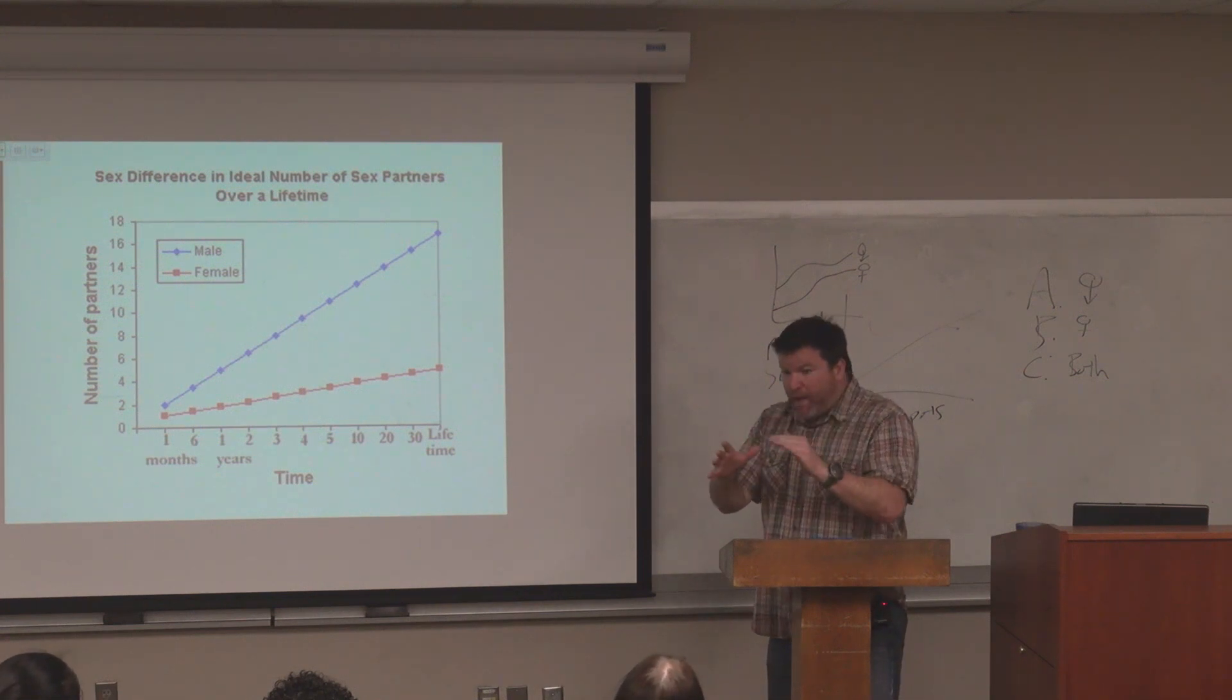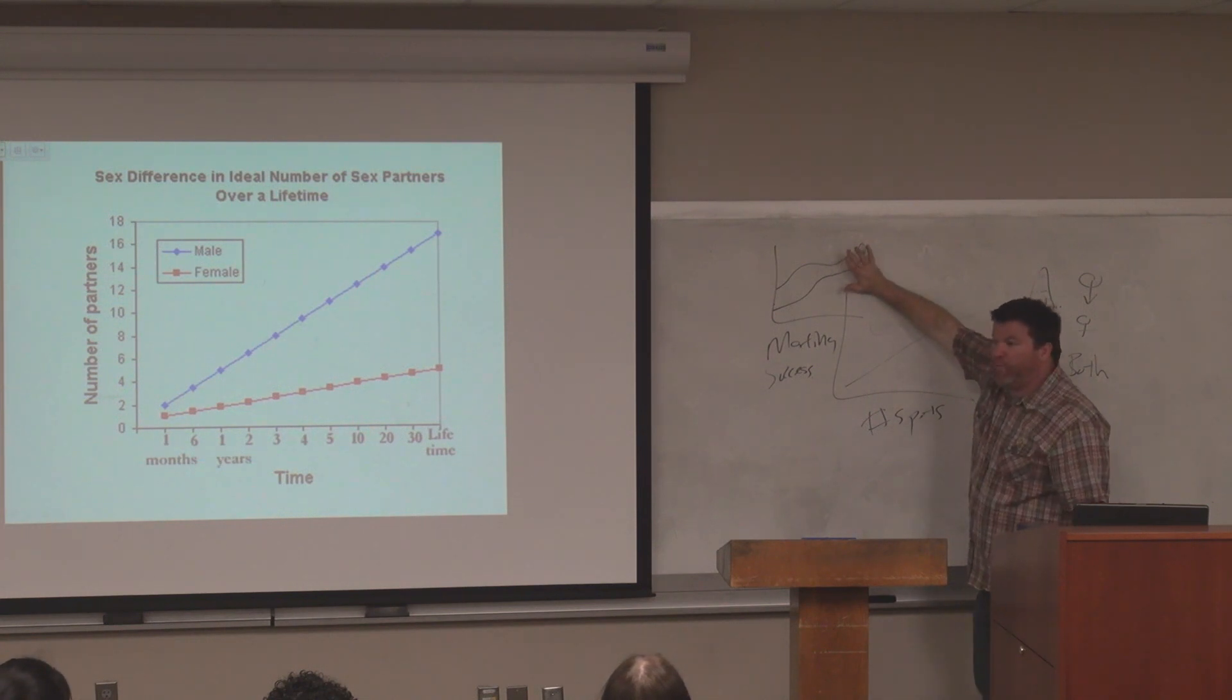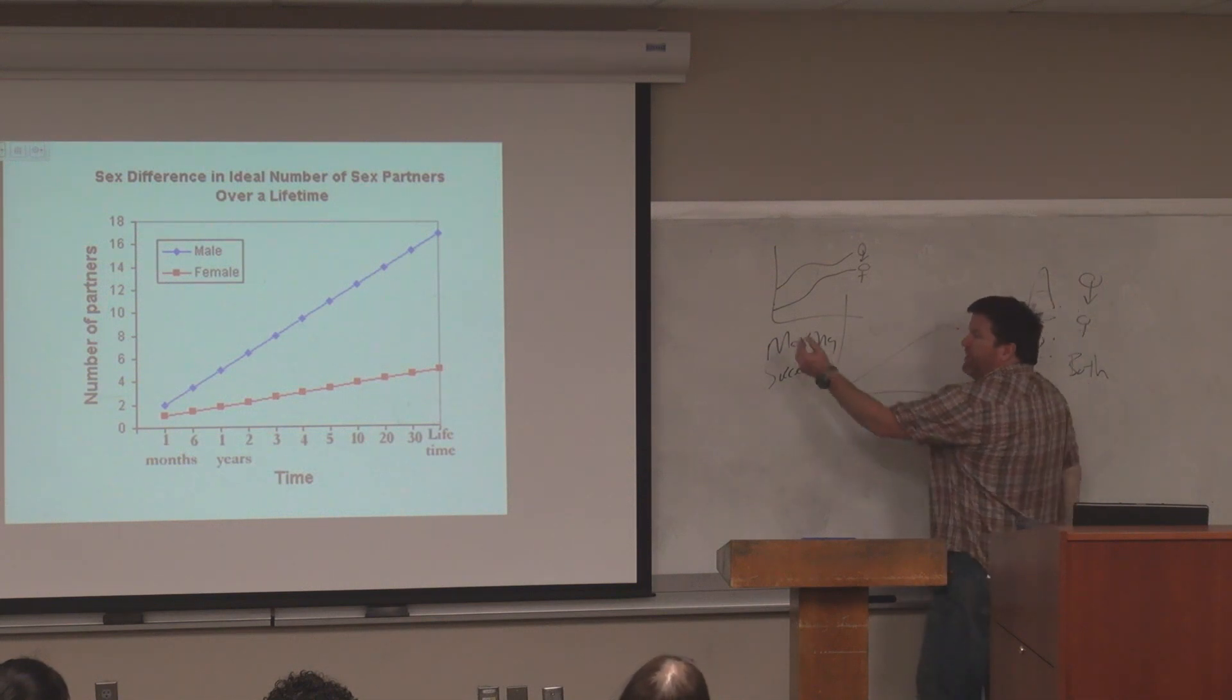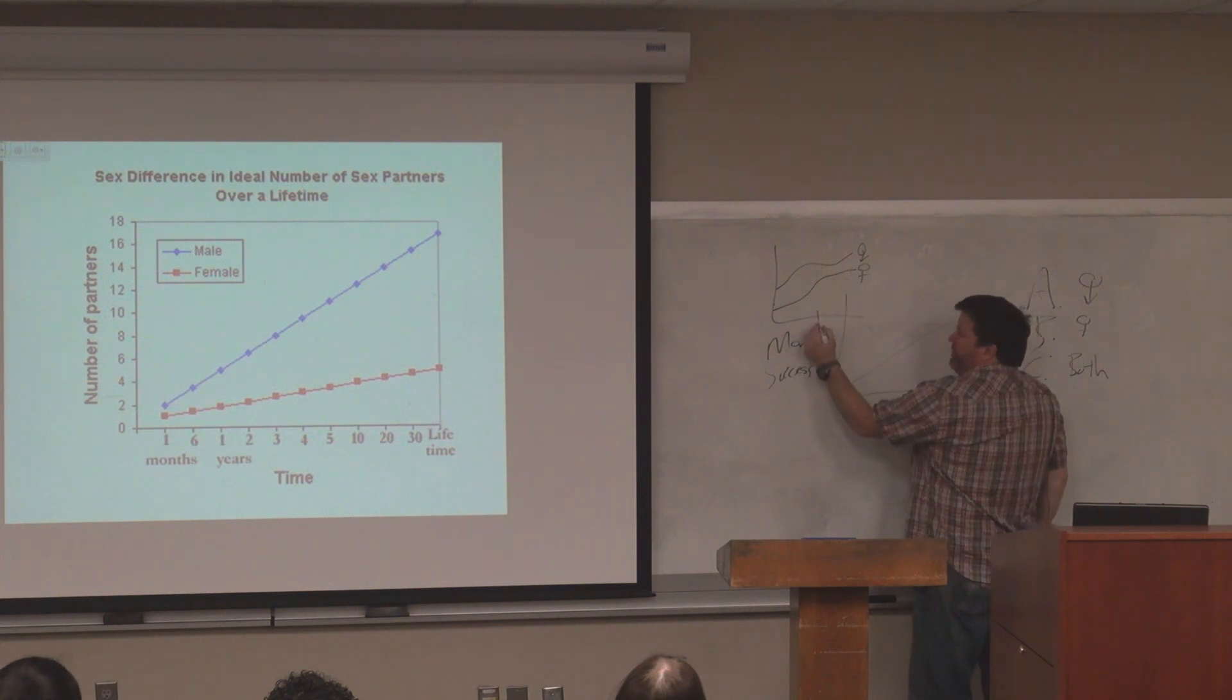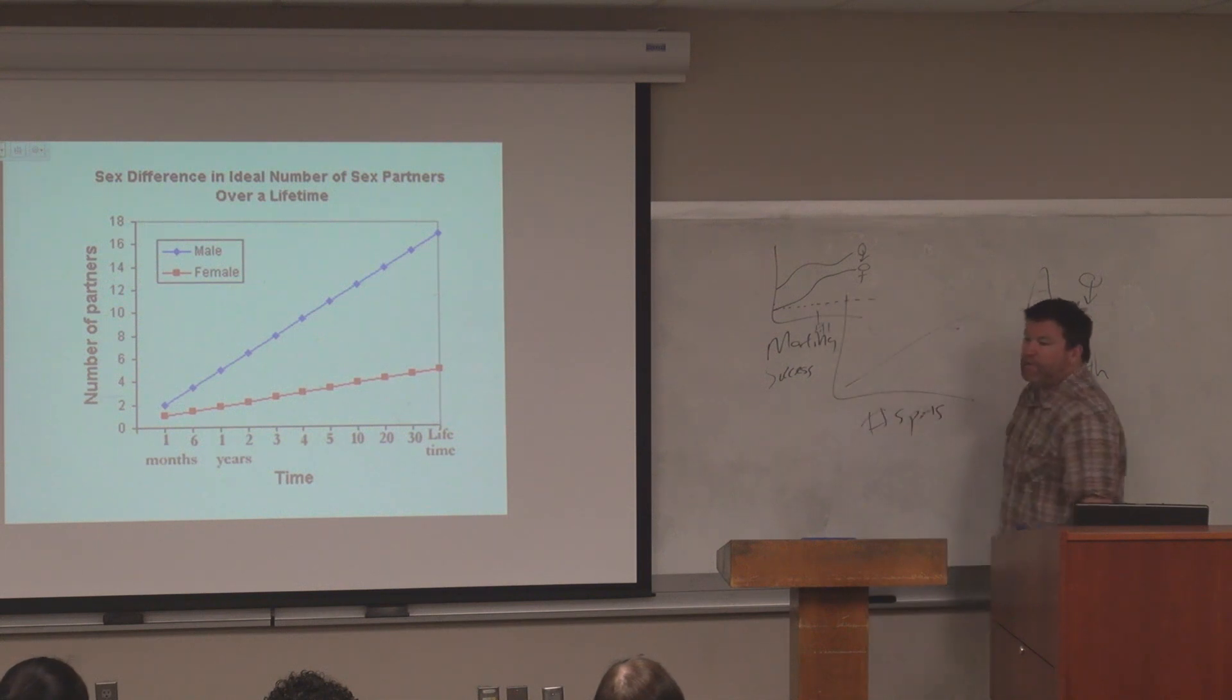So I'm going what data can we induce to start getting at this question? And if it were straight, let's just look at the birth control stuff. If it were simply biology was the only variable that mattered and we're looking at willingness to engage in sexual intercourse, should the female line look like this after the pill was invented? You have a pill right here, pill day.